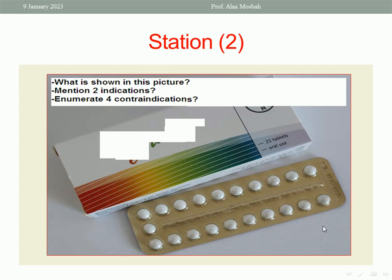What about the contraindications? Enumerate four contraindications. COC is contraindicated in patients with a history of breast cancer or family history of breast cancer. Also in thromboembolism — if the patient has high risk for thromboembolism there is a contraindication to give her COC. Heavy smoker and obesity with BMI more than 35 kg per square meter are also considered contraindications for using COC.